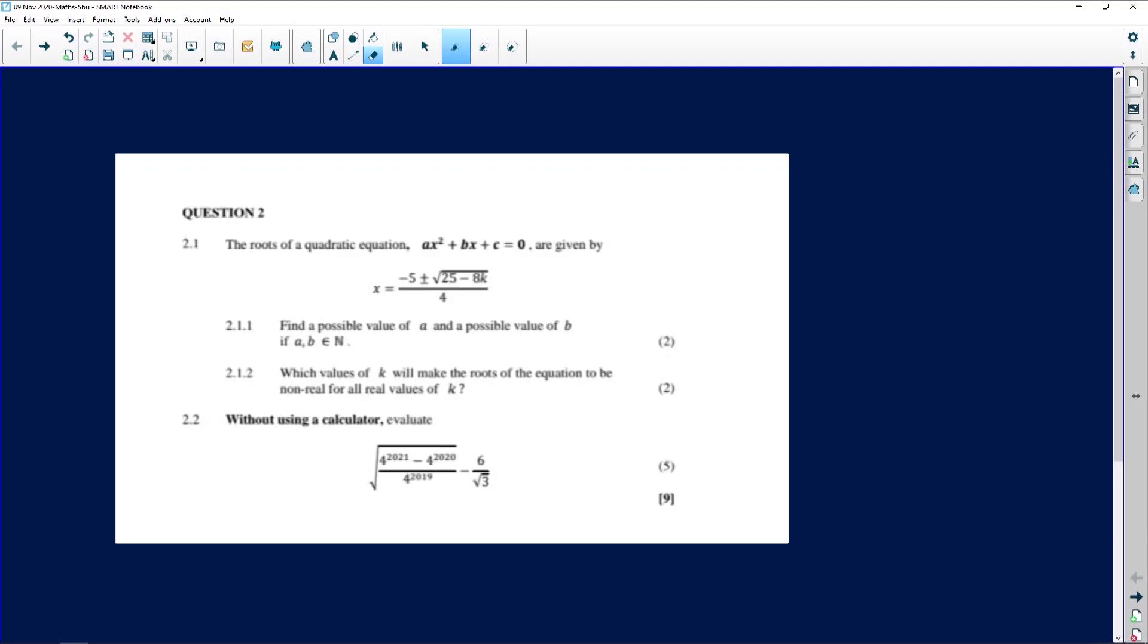Question 2.1 reads as follows: the roots of a quadratic equation ax² + bx + c = 0 are given by x = (-5 ± √(25 - 8k)) / 4. Part 2.1.1 says find a possible value of a and a possible value of b if both a and b are elements of natural numbers.